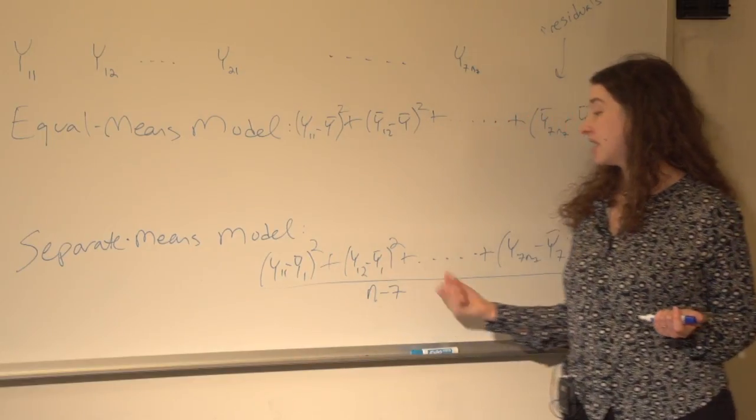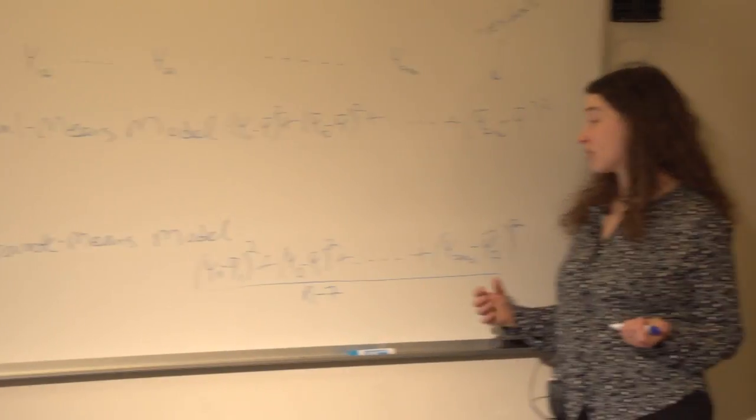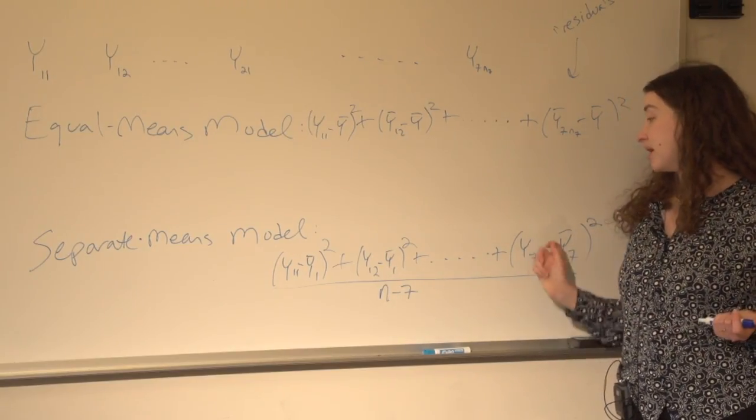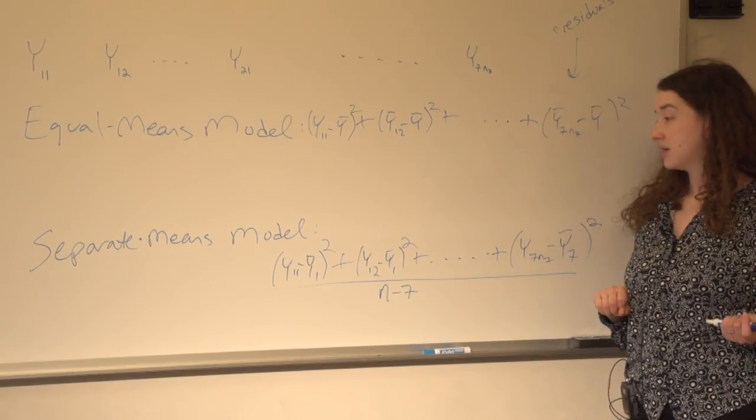Within each group, let's see how far the points are from the mean in that group. Let's square all those residuals, add them up, divide by how many there are, minus the number of values that I estimated.